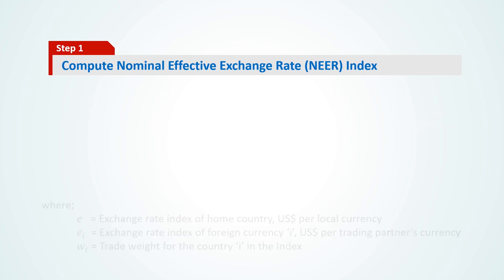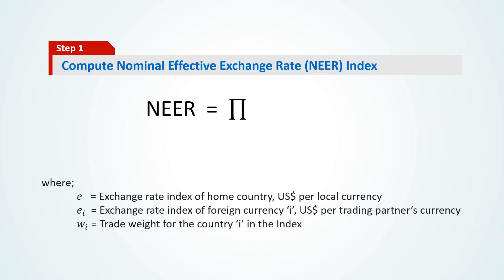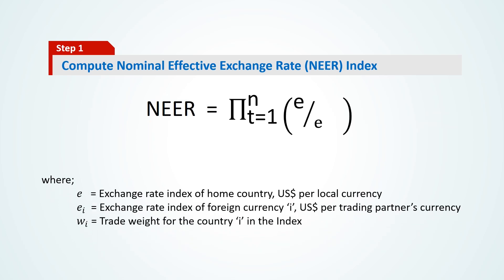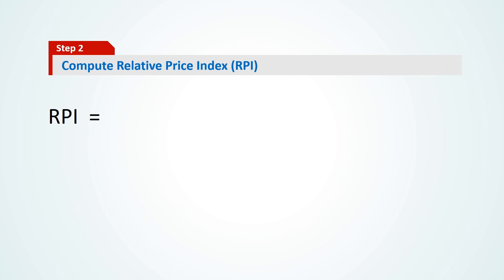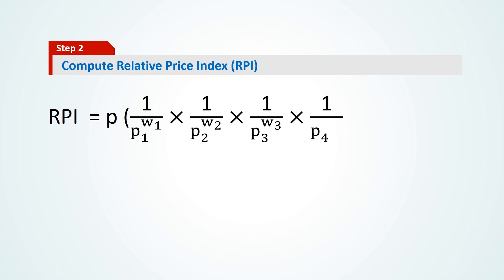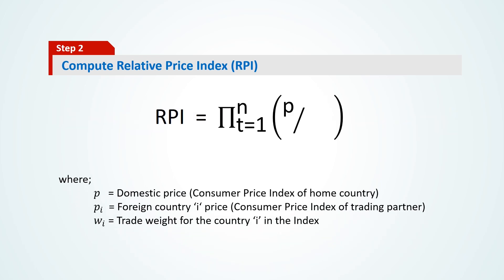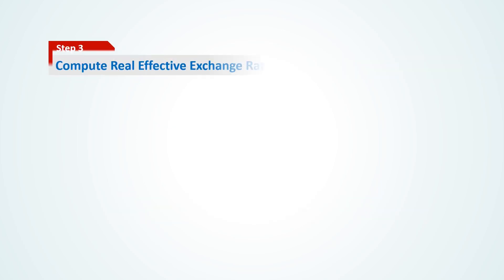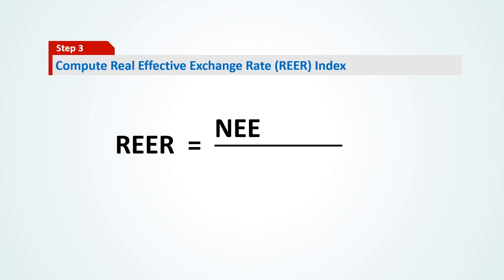Before doing that, it is important to note that the exchange rate of each country is expressed in terms of the US dollar that one unit of domestic currency can buy. In the next step, like in the case of NEAR, we calculate the ratio of domestic price to weighted average foreign prices to get the relative price index, i.e. RPI. REAR is then simply calculated by multiplying NEAR with the relative price index.